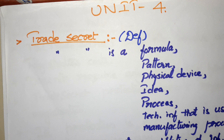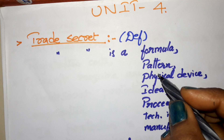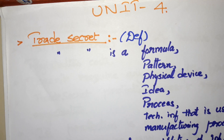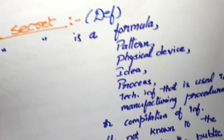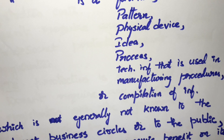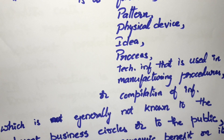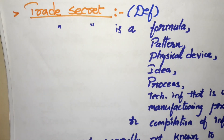Today we will see Unit 4, that is nothing but a trade secret. First, we will see what is a trade secret. A trade secret is a formula, pattern, physical device, idea, process, or technical information that is used in manufacturing procedures or compilation of information.